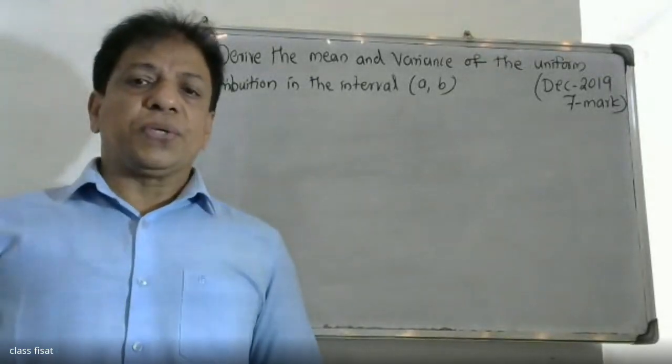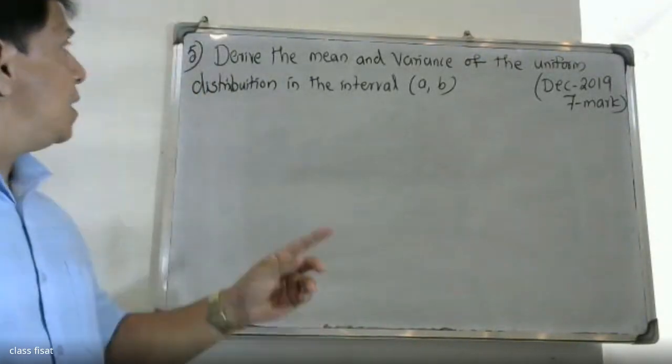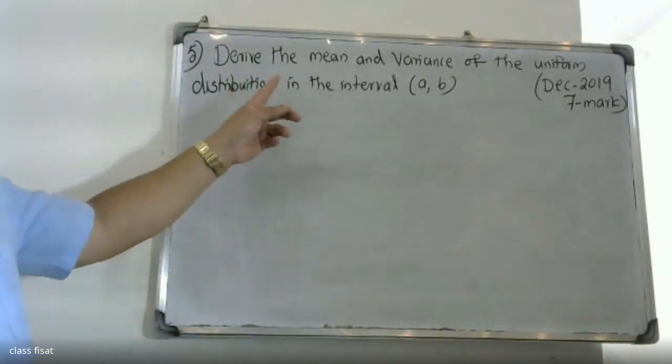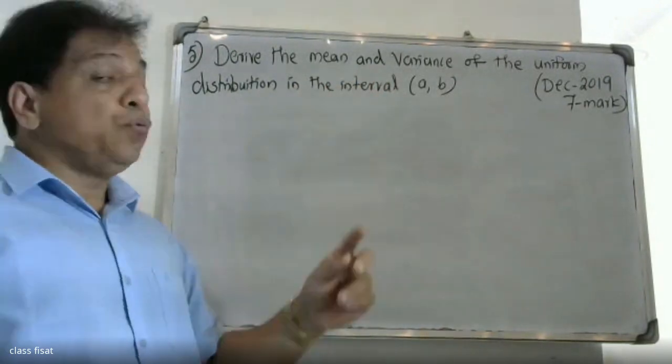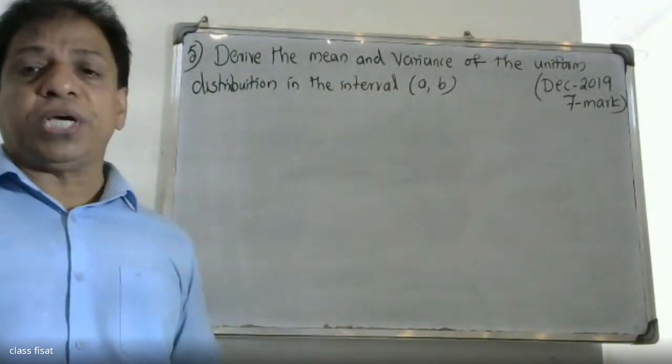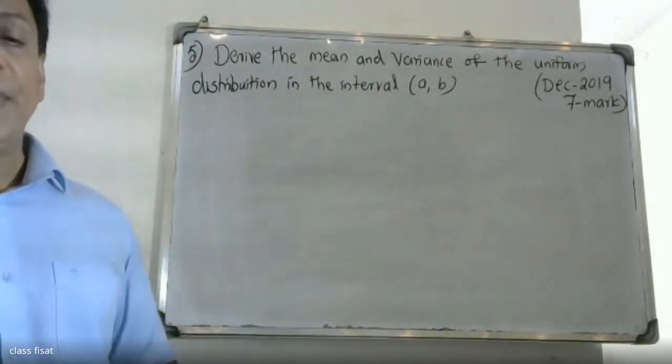Good morning, students. This is an Adita University question: Derive the mean and variance of the uniform distribution in the interval a, b.